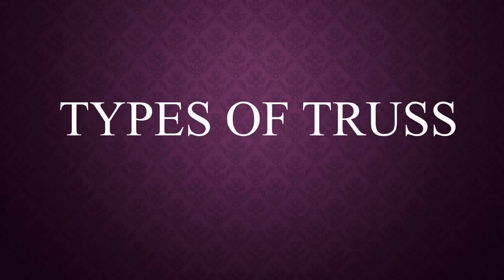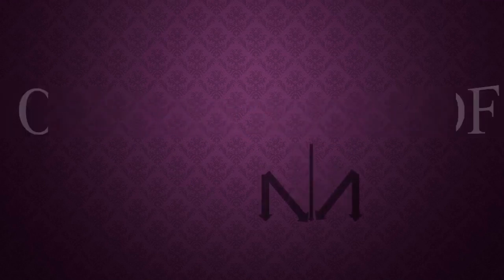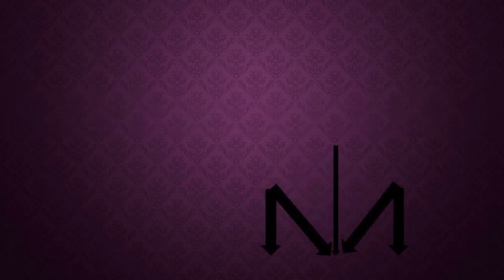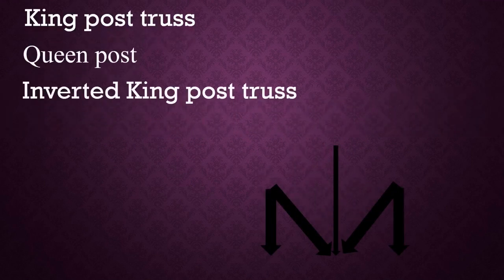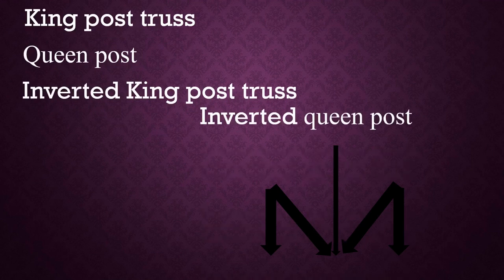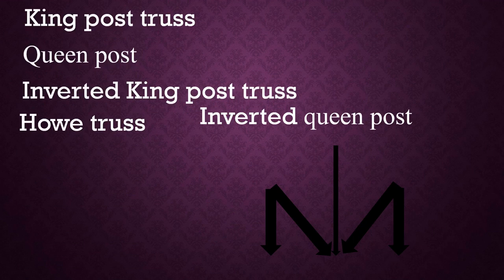Assalamu alaikum dear students, today we will read about trusses and types of trusses. The first one is king post truss, second one is queen post truss, third one is inverted king post truss, fourth one is inverted queen post truss, fifth one is howe truss, sixth one is Warren truss, seventh one is Fink truss, and eighth one is Pratt truss.